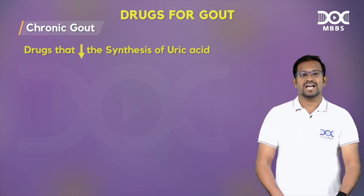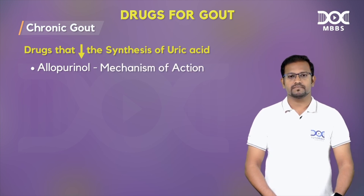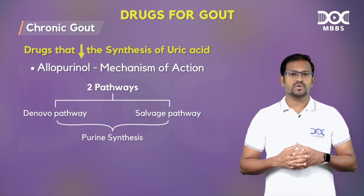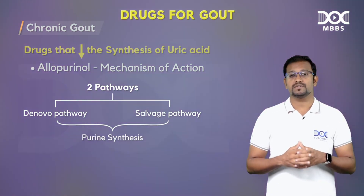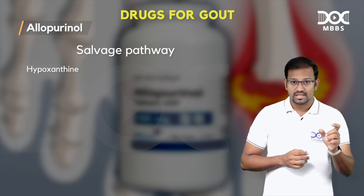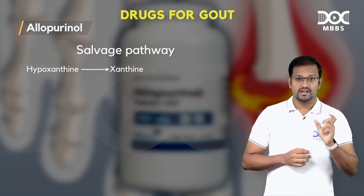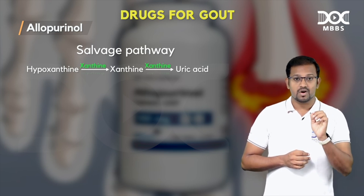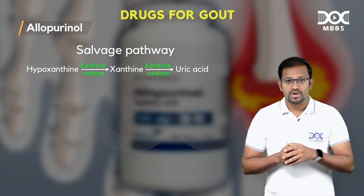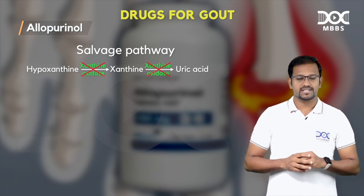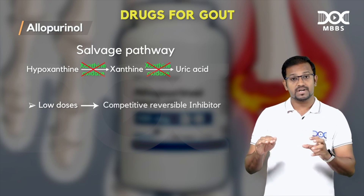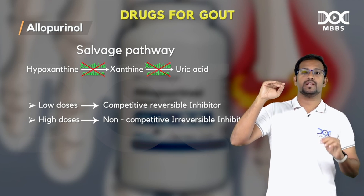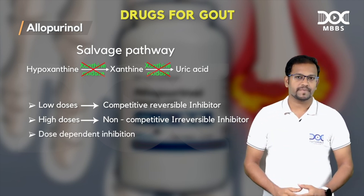The first and foremost famous drug is allopurinol. The mechanism of action involves two different pathways — the de novo pathway and the salvage pathway — in the synthesis of purines. In the salvage pathway, hypoxanthine is broken down to xanthine, and xanthine is broken down to uric acid. Both of these steps are catalyzed by the same enzyme, xanthine oxidase. Allopurinol inhibits this xanthine oxidase enzyme: at low doses it behaves as a competitive reversible inhibitor, and at high doses it is a non-competitive irreversible inhibitor.